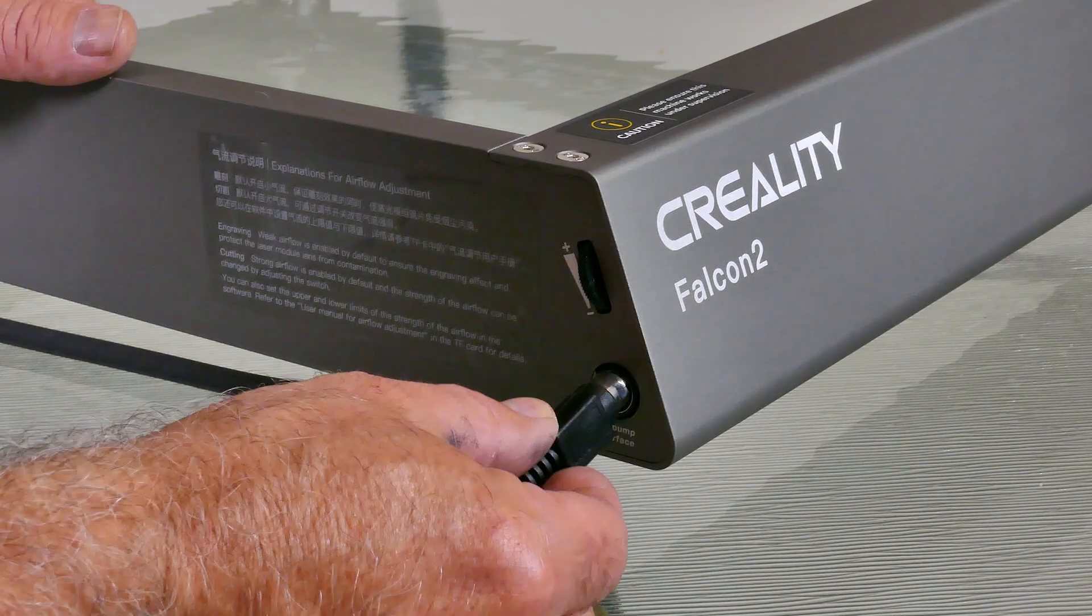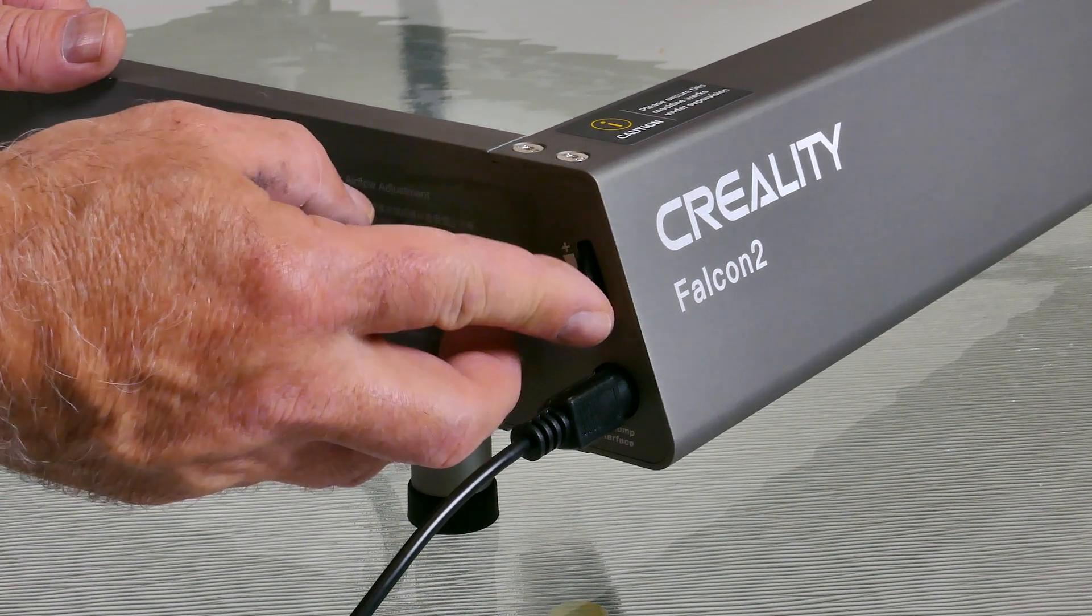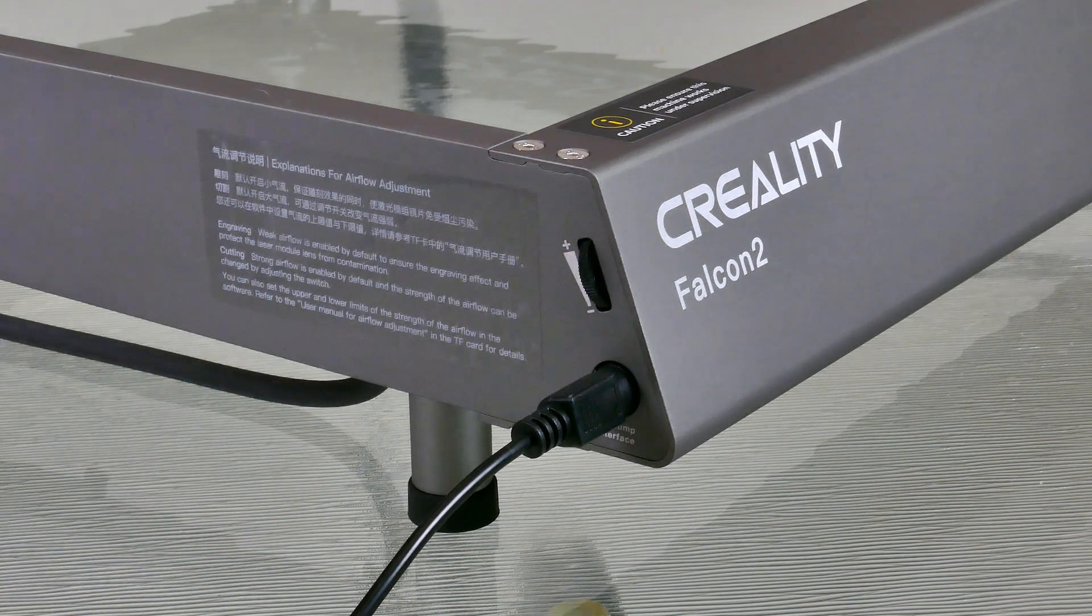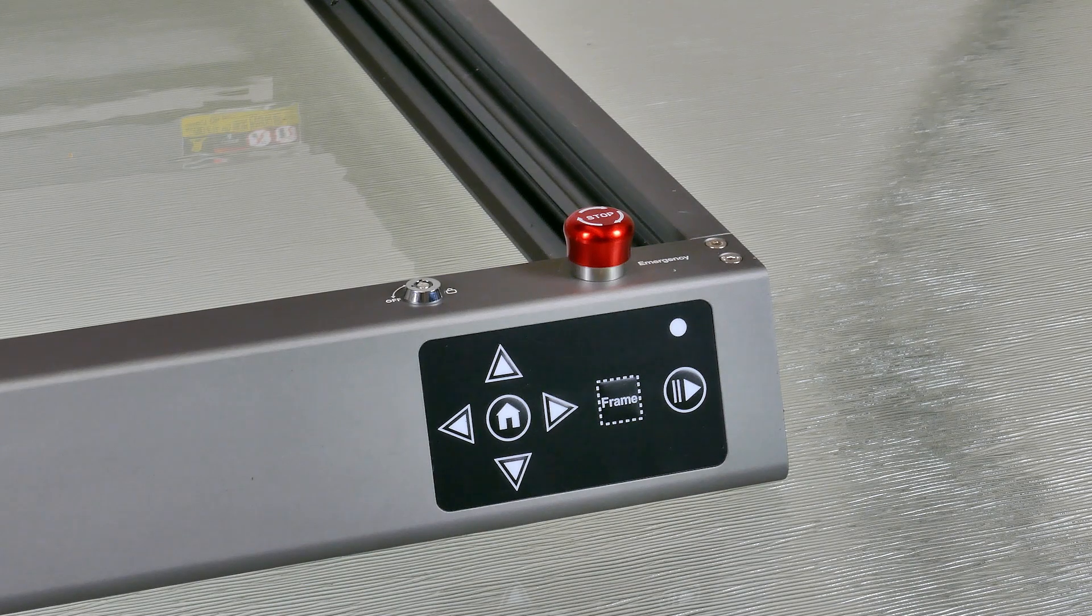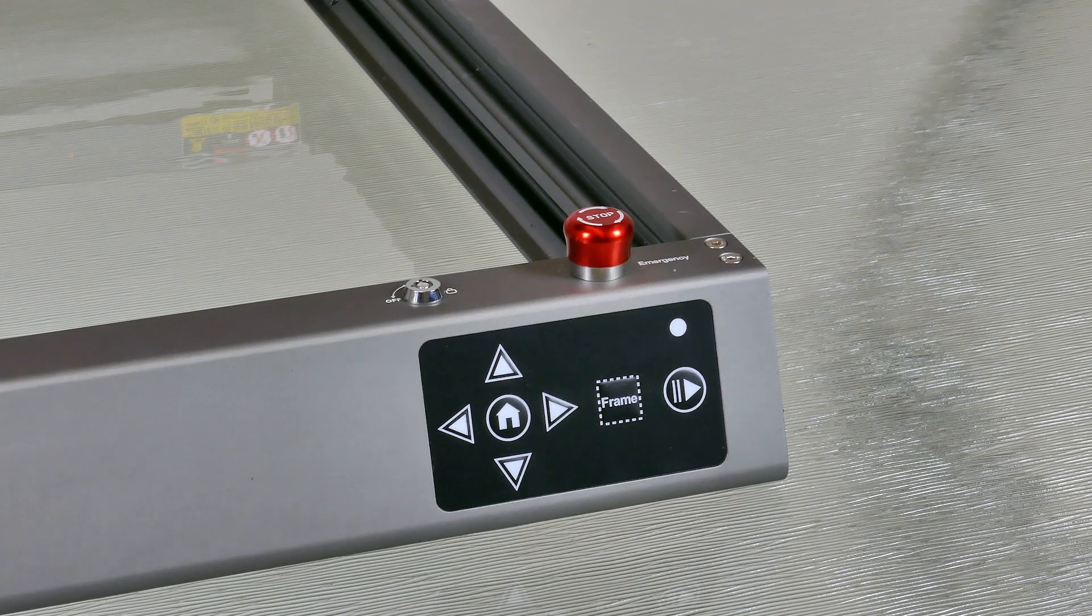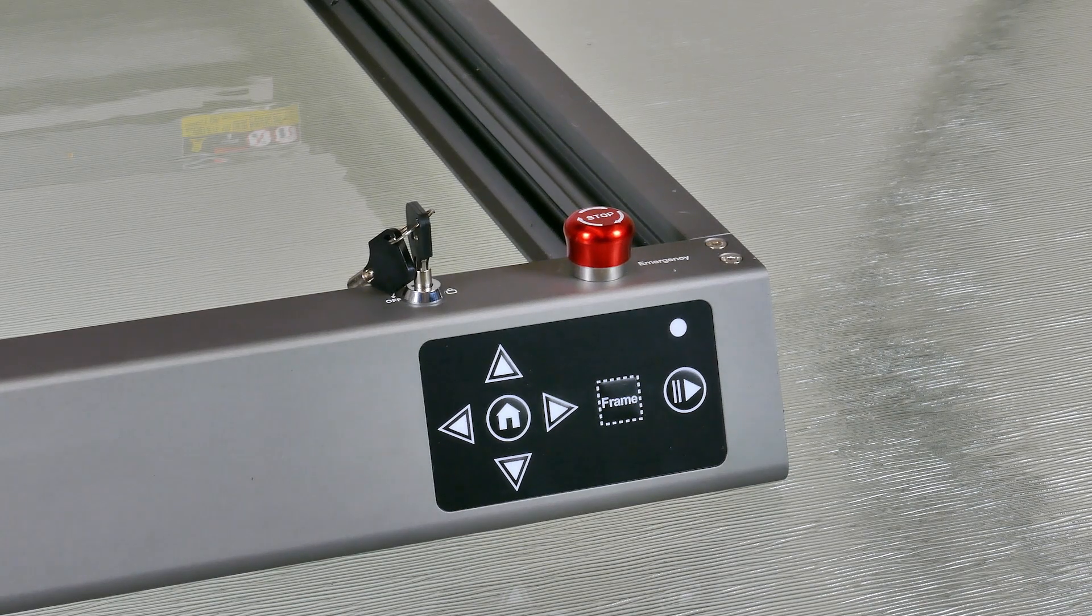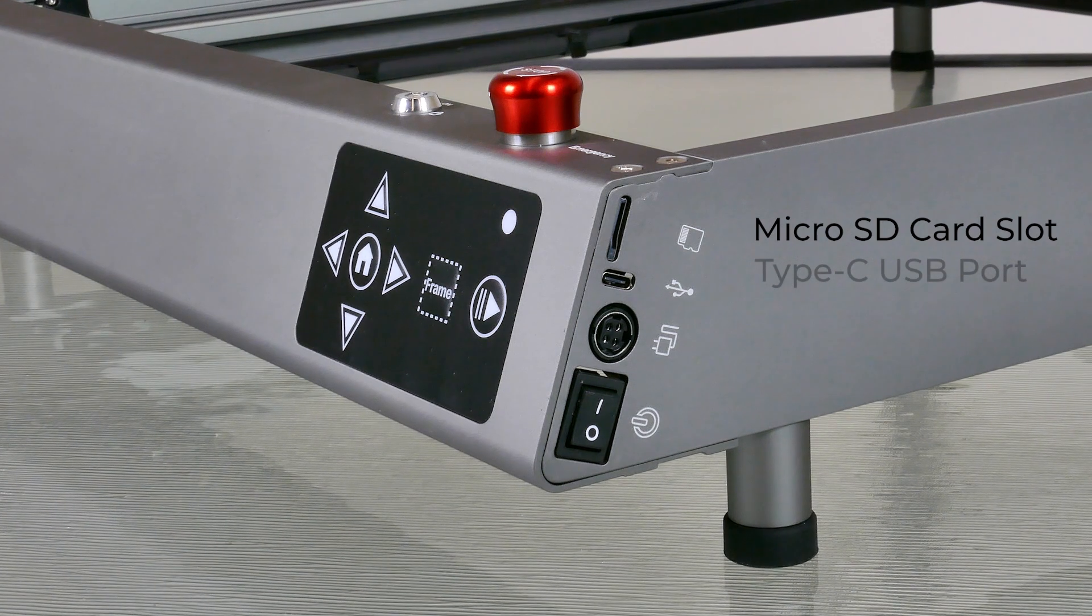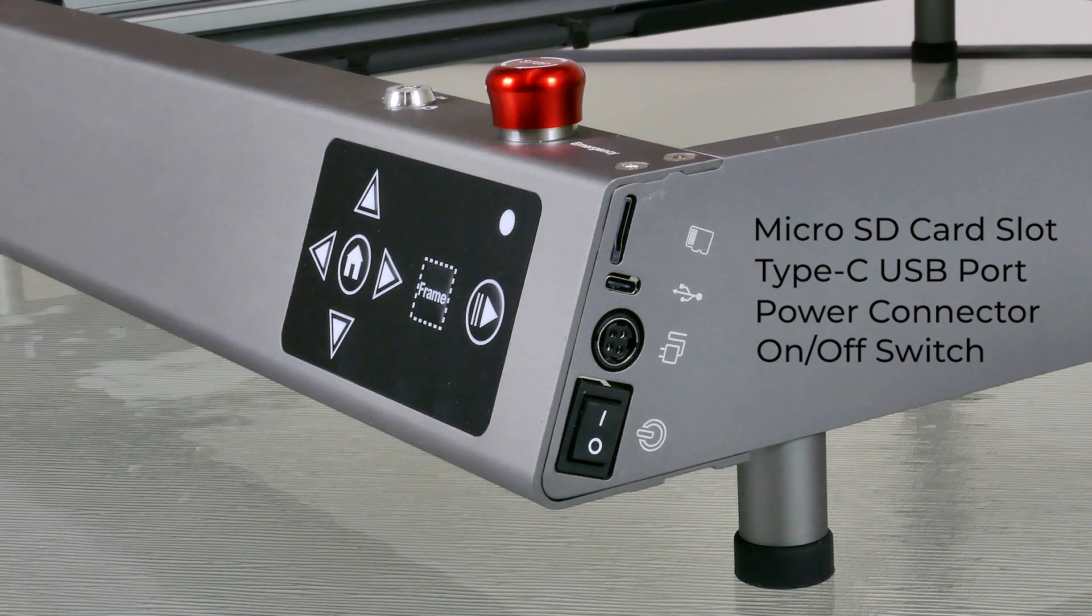When I connected up the power supply I adjusted the airflow to its maximum. You can also control the air volume through the software. On the front of the frame we have the panel for homing, framing, as well as starting the job. It also has a safety cutoff switch just in case something goes wrong. On the side of the unit we have multiple connections that include the micro SD card slot, the type C USB port, power connector, and the on and off switch.